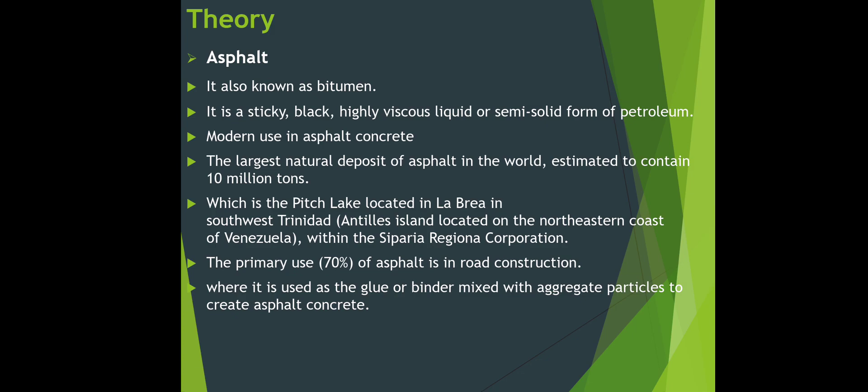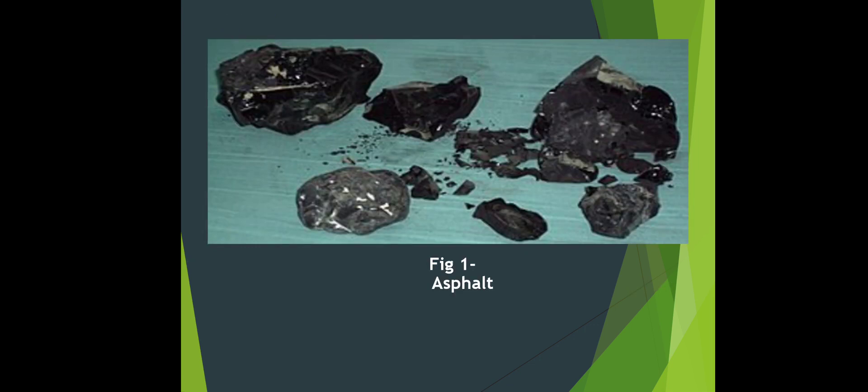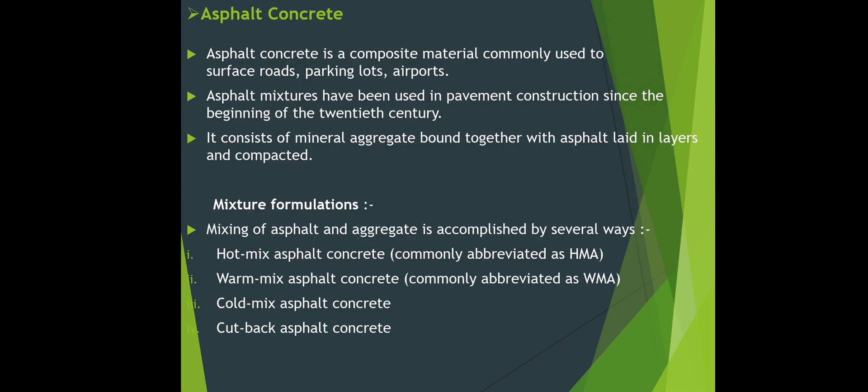Theory — Asphalt: it is known as bitumen. It is a sticky, black, highly viscous liquid or semi-solid form of petroleum. The largest natural deposit of asphalt in the world, estimated to contain 10 million tons, is the Pitch Lake located in La Brea in south-west Trinidad. The primary use — 70 to 75% of asphalt — is in road construction.